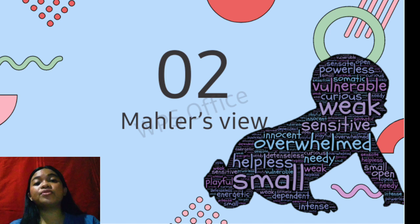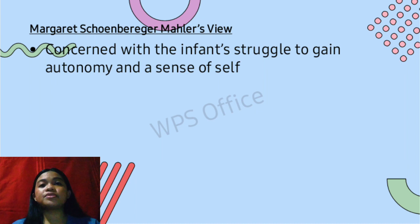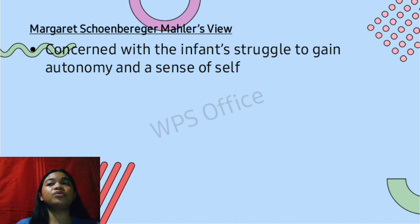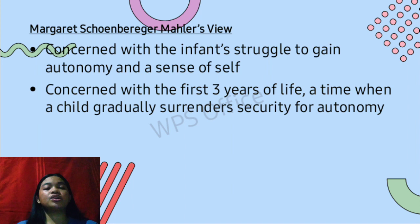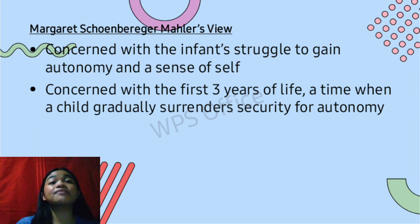Mahler is concerned with the infant's struggle to gain autonomy and a sense of self. She focused on the infant gaining a sense of independence and individualism — autonomy — as well as a sense of self, which is the perception and recognition of the characteristics that define us. Mahler is also concerned with the first three years of life, a time when a child gradually surrenders security for autonomy — progressively giving up the support received from the mother in exchange for individuality and a sense of self.